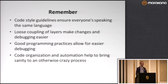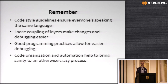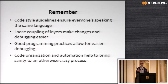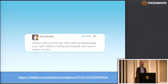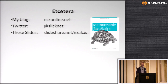Just some things to remember: code style guidelines ensure everyone's speaking the same language, which is important because code is our primary communication medium. Loose coupling of your front-end layers makes changing and debugging easier. Good programming practices allow for easier debugging — leave yourself hints about what you should be doing. Code organization and automation bring sanity to all of this so you don't have to remember everything on your own. And I'd like to leave you with this thought: always code as if the person who ends up maintaining your code will be a violent psychopath who knows where you live. Thanks.